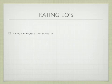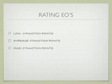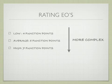A low EO has four function points. An average EO has five function points. A high EO has seven function points. Again, we would say that a high external output is more complex than a low external output.